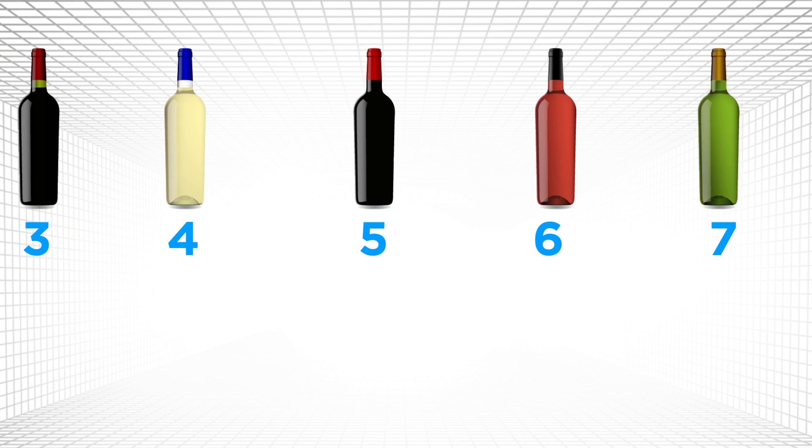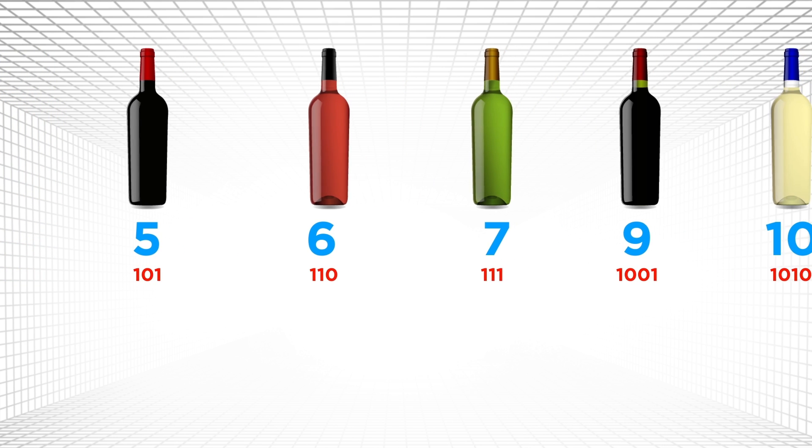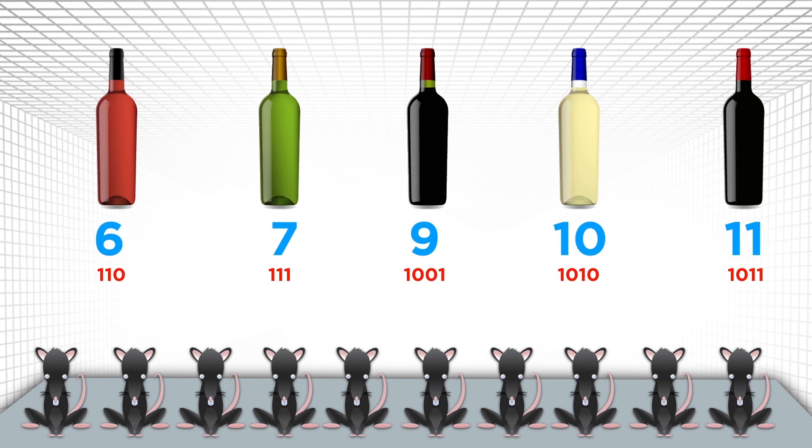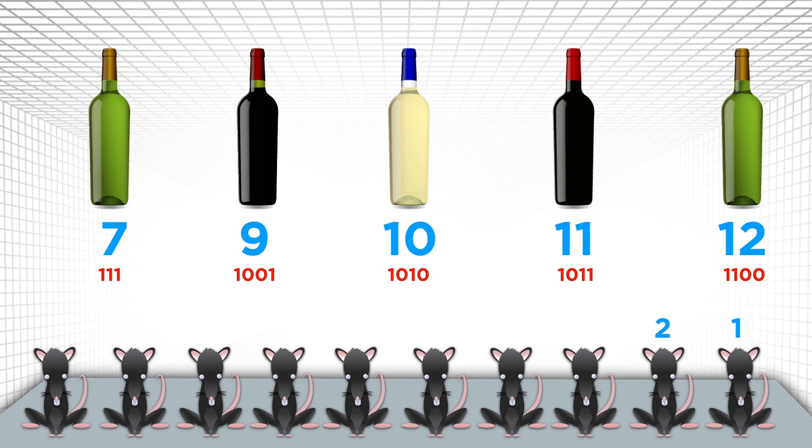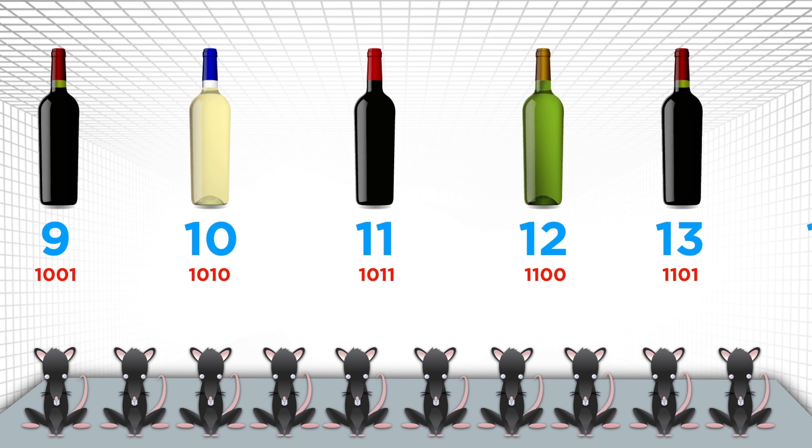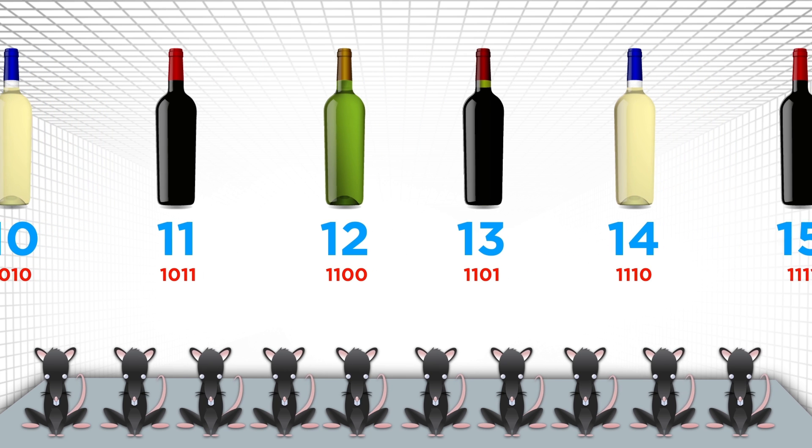But back to what's important. How is all this binary number stuff helping us save wine? Basically, by giving us a way to encode each bottle. Similar to the last strategy, label each bottle of wine with a number one through a thousand. But this time, underneath their base ten representation, also label them in binary. Now, set up the rats in a row. These rats will represent the digits of a binary number. So the rightmost rat represents the ones, then the next one over is the twos, then the fours, and so on. The leftmost rat represents the five hundred and twelfth place. Take each bottle of wine and feed it to those rats which represent a one in the binary number on the bottle's label.